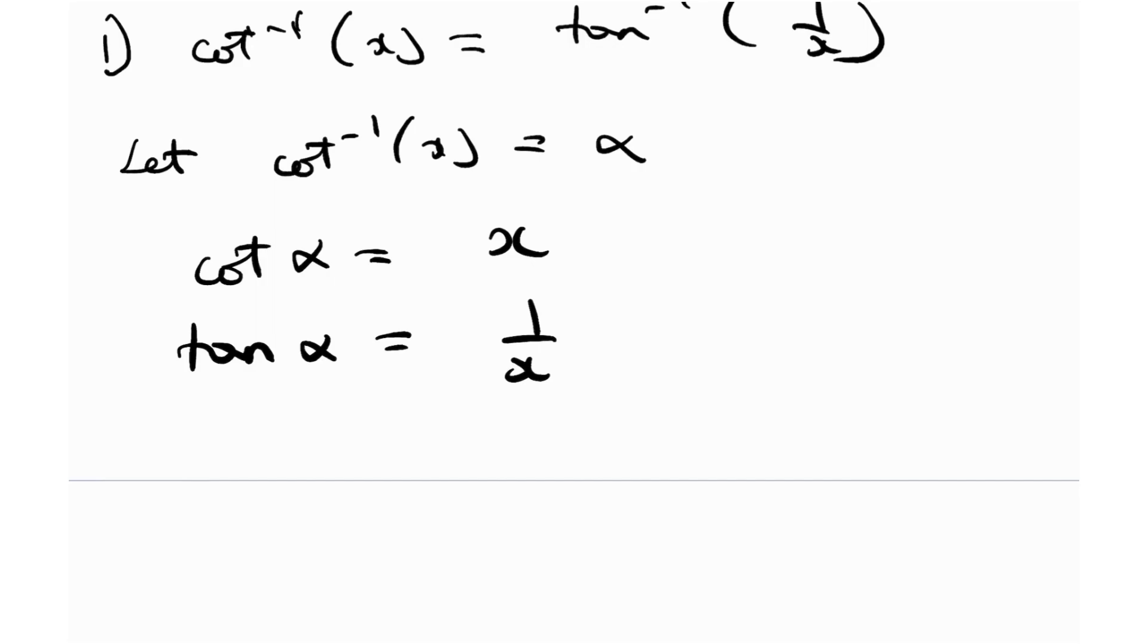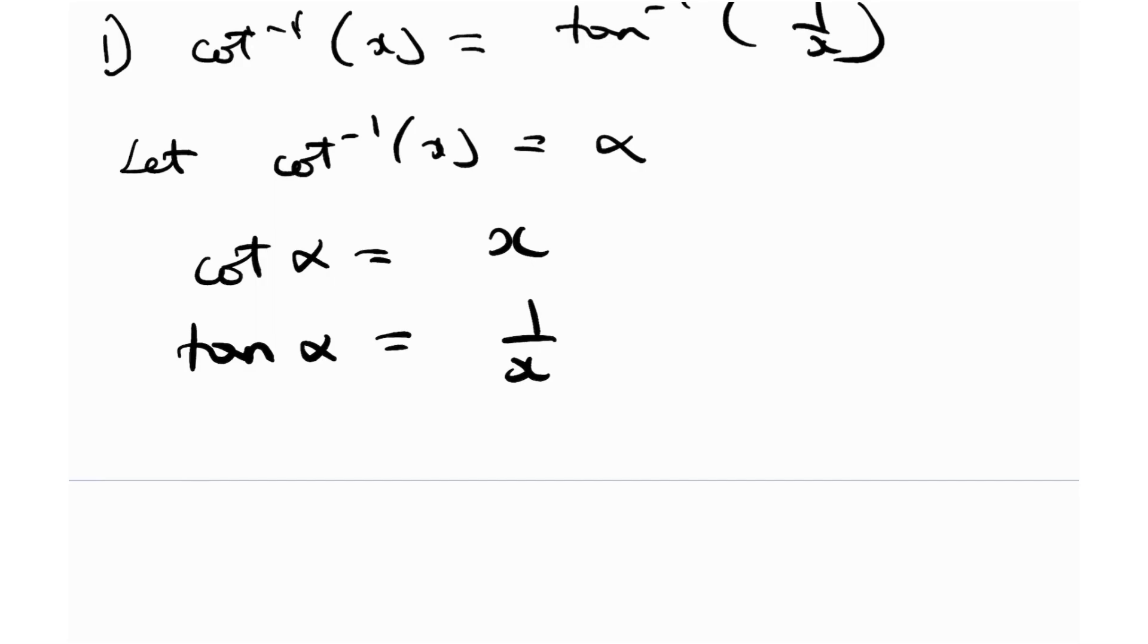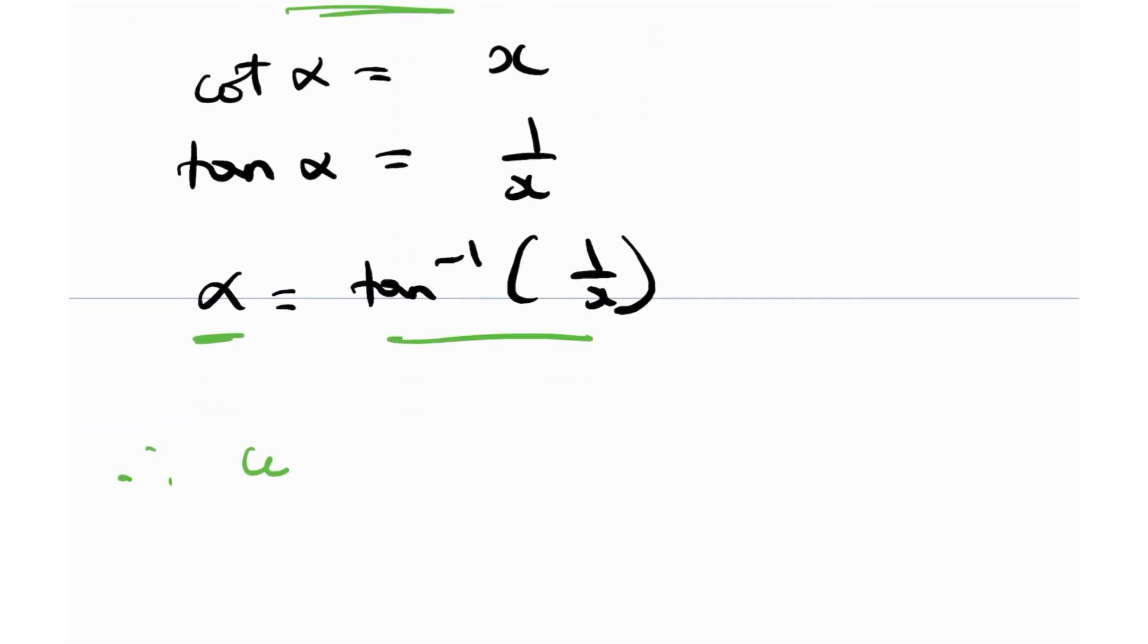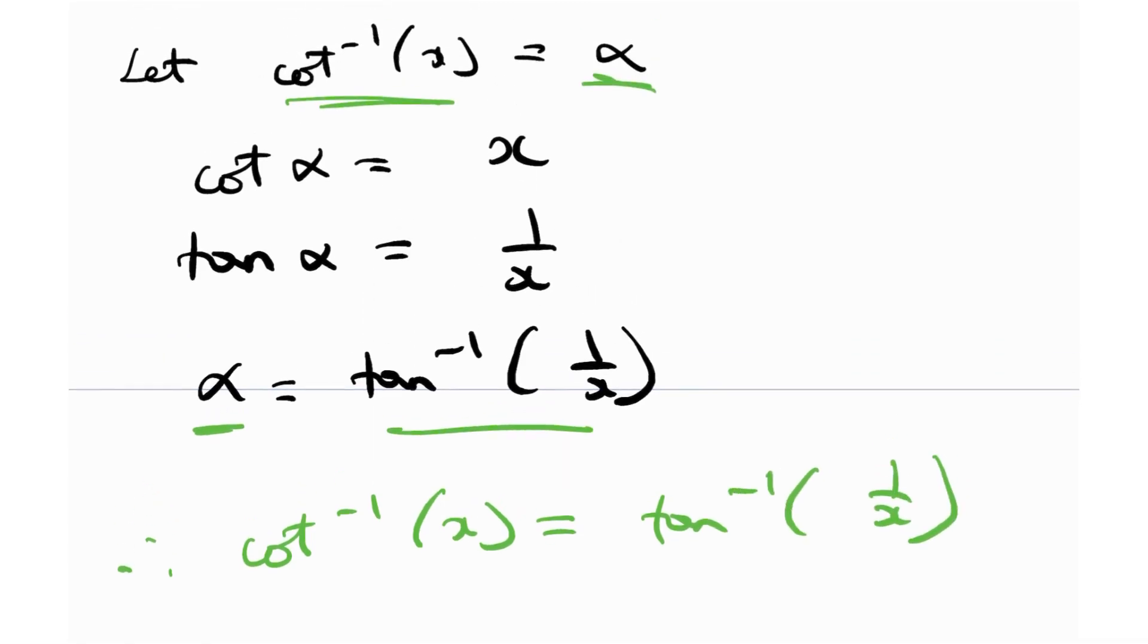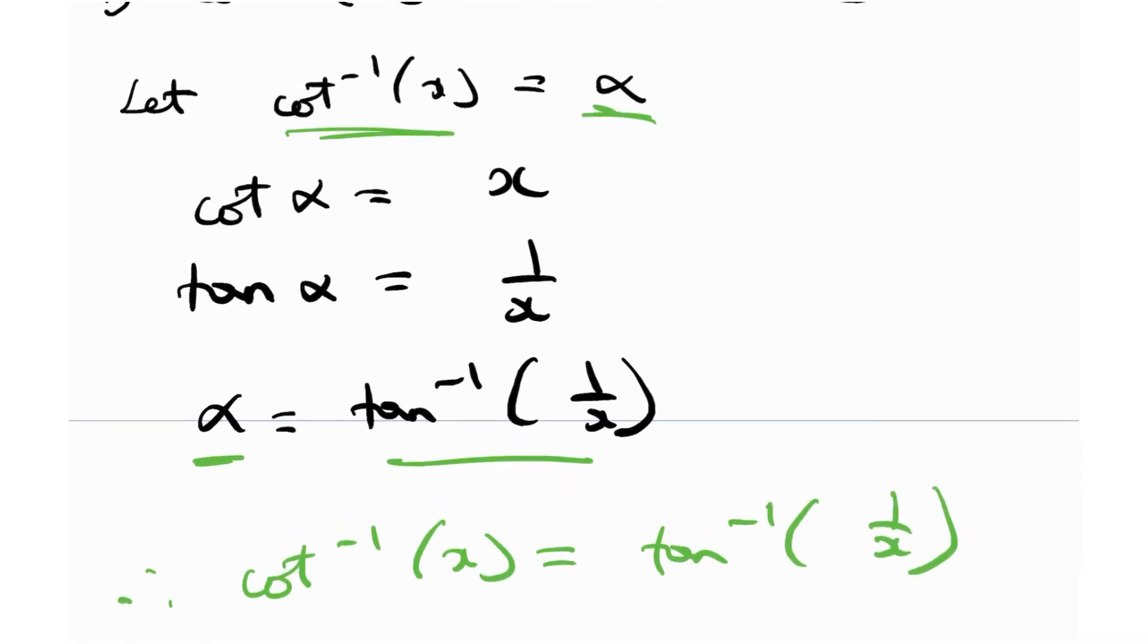But then what will be alpha? Alpha will be tangent inverse 1 by x. But this alpha was equal to cotangent inverse x. And here we are seeing that it's equal to tangent inverse 1 by x. So therefore, I can conclude that cotangent inverse x is equal to tangent inverse 1 by x. And that is the property that I had mentioned over here. Property number 1.